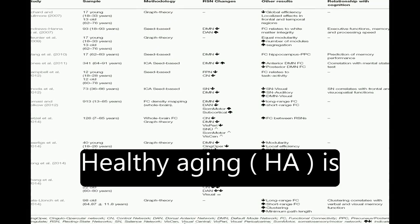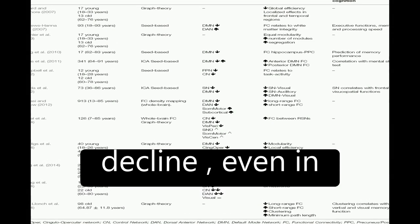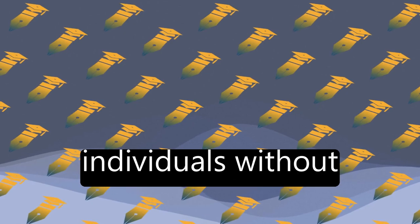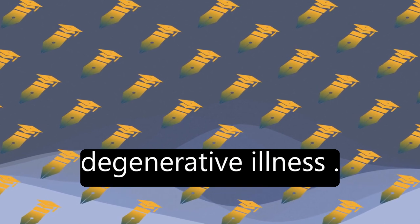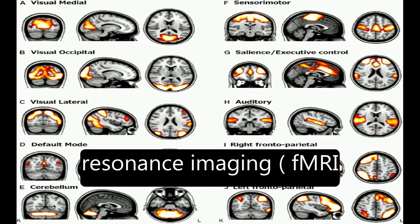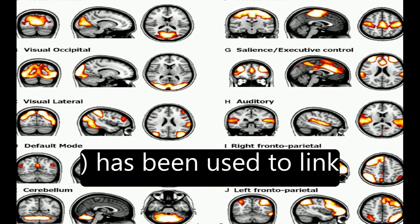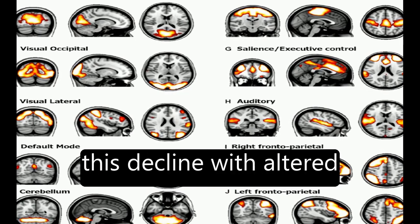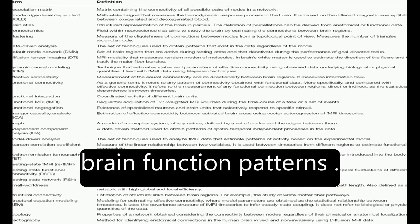Healthy aging (HA) is associated with cognitive decline, even in individuals without degenerative illness. Functional magnetic resonance imaging (fMRI) has been used to link this decline with altered brain function patterns.